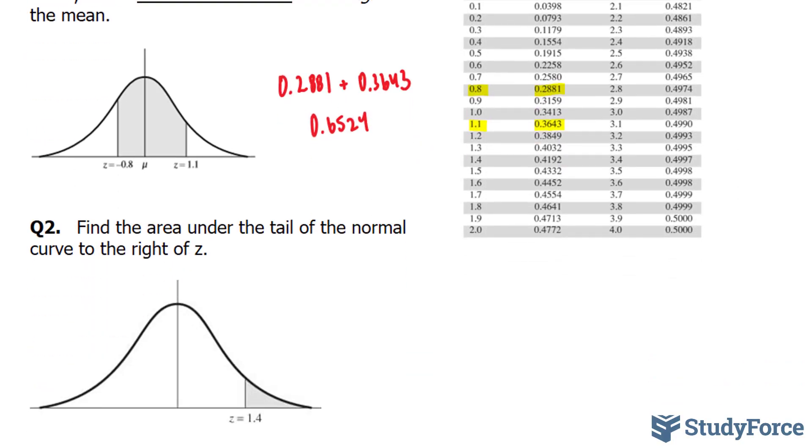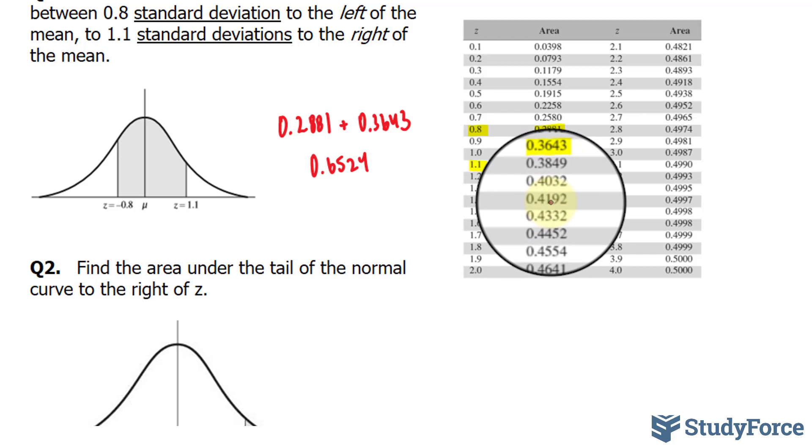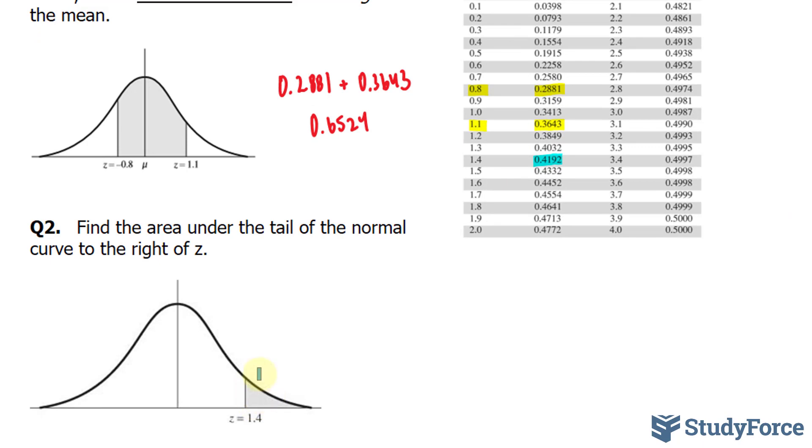Let's move on to question two. In question two we're asked to find the area under the tail of the normal curve to the right of z. So our z-value here is 1.4, let's take a look at what that is equal to. 1.4 is 0.4192 and I'll highlight that in blue. They want us to find out what this area is equal to.